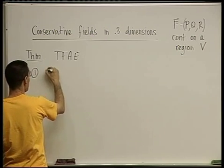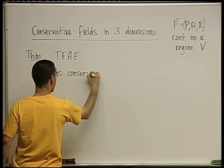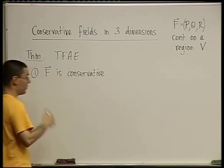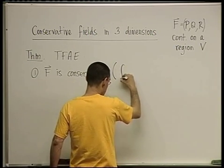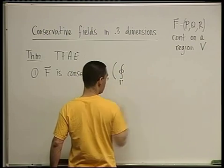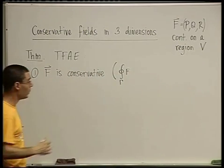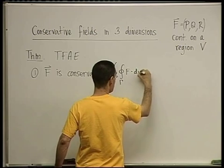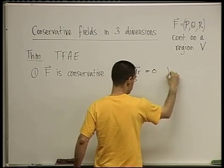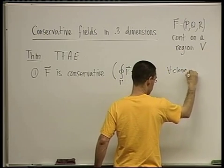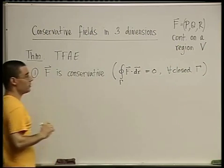One: F is conservative. By definition, saying that a field is conservative means the line integral over any closed curve gamma — gamma has to be contained in the region V — equals zero. That was the definition of a conservative field.